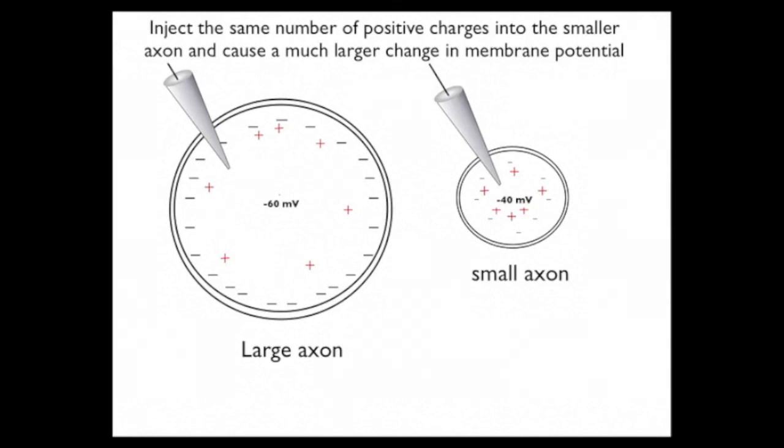It takes more charges to change the membrane potential by a millivolt than a smaller axon does because the smaller axon has a smaller capacitance. That's the major point.